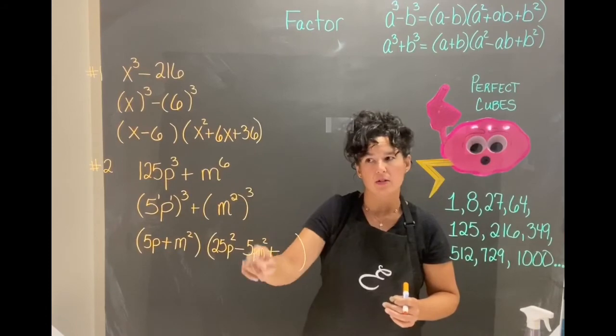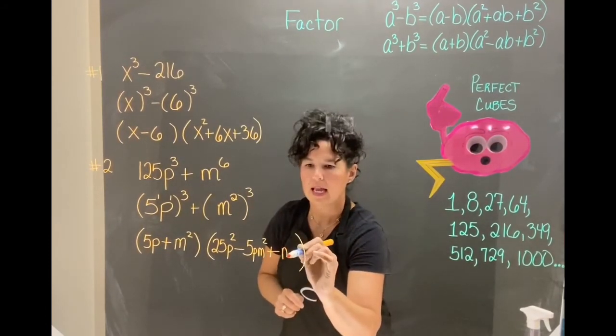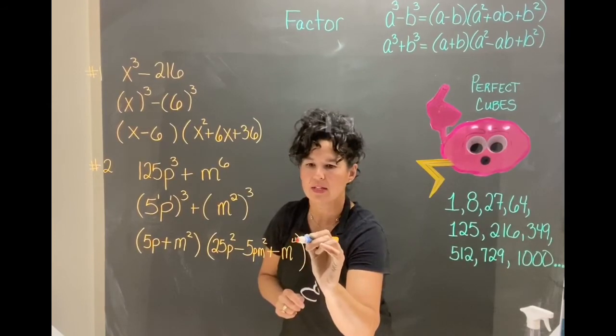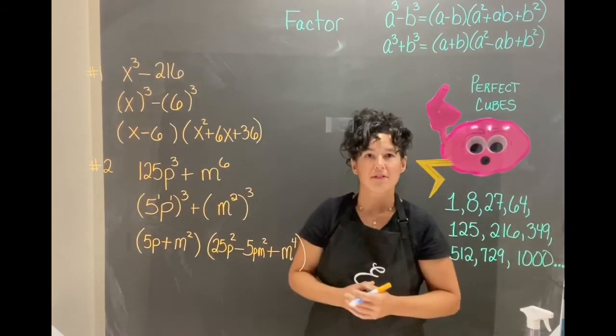And then plus b squared. My b is m squared so m squared times m squared, like bases add exponents, m to the fourth and we've got it factored.